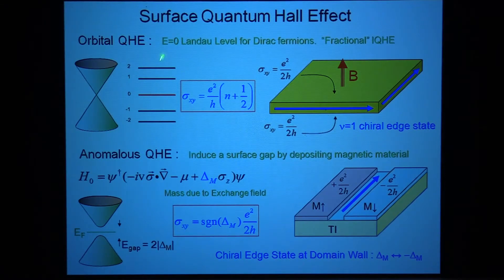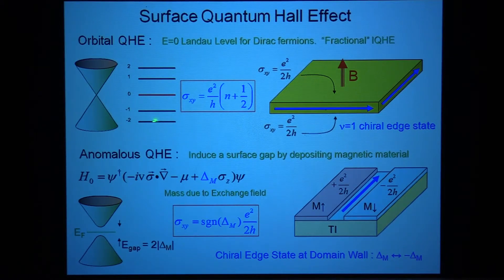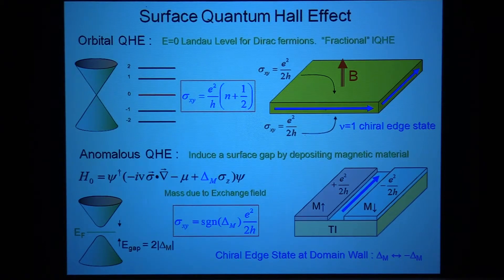Because of particle-hole symmetry, if you change the sign of the Fermi energy you should change the sign of σ_xy. That means going from just below to just above zero, the Hall conductivity must go from -1/2 to +1/2 in units of e²/h. So the Hall conductivity of the surface appears to be integer-quantized but in half-integer units, which seems to violate the rules of the integer quantum Hall effect — Laughlin's argument says it must be integer quantized.